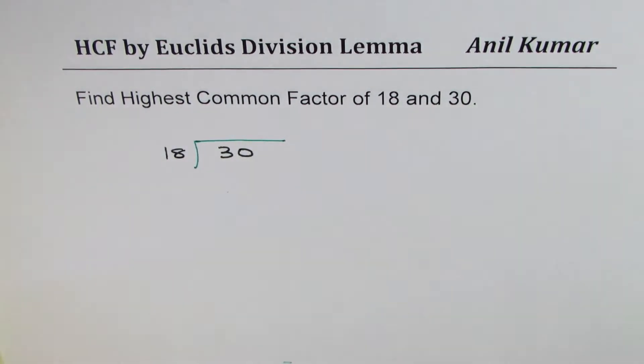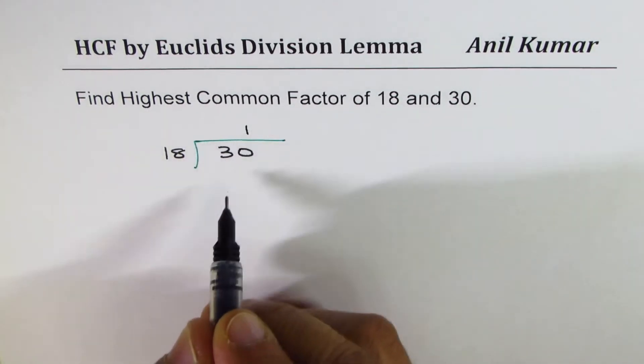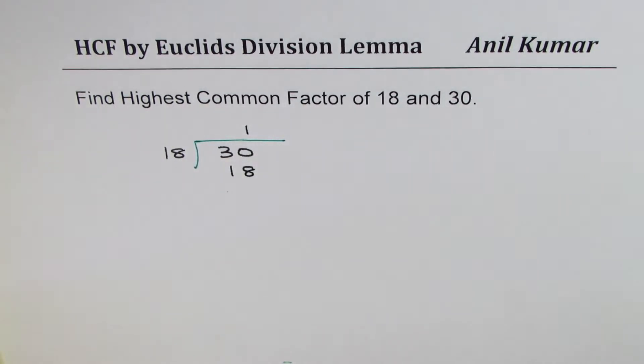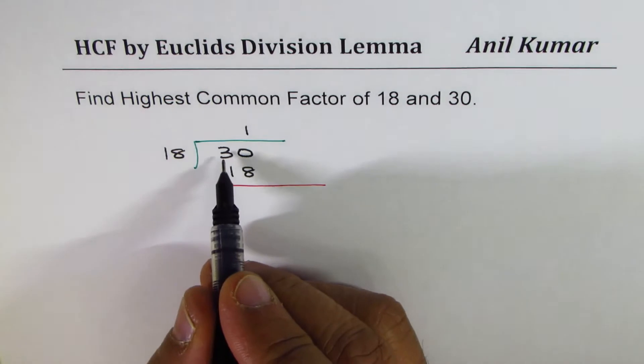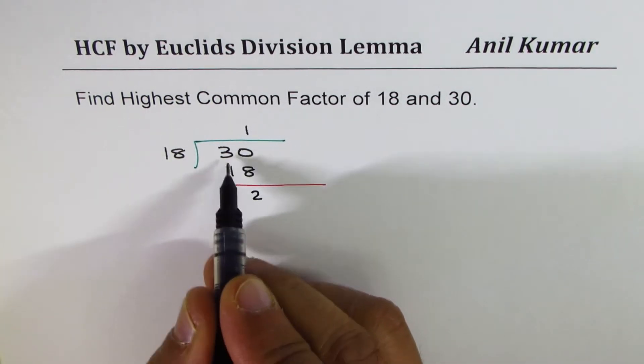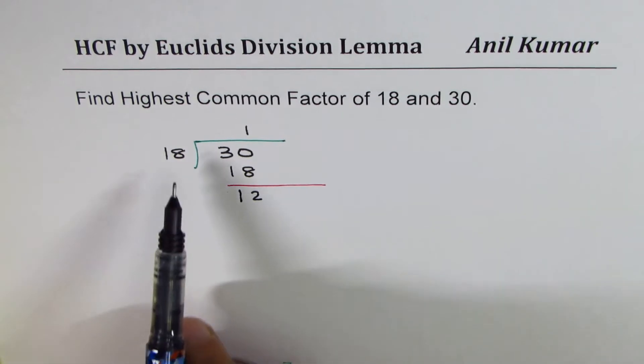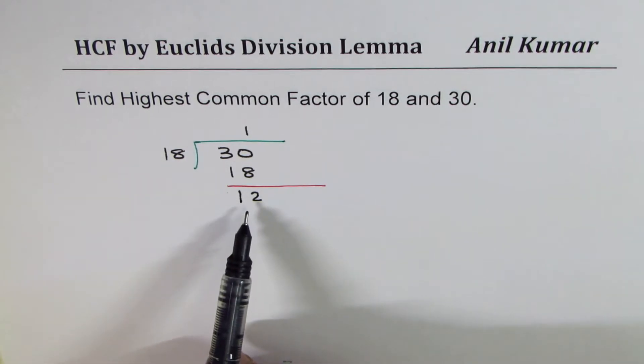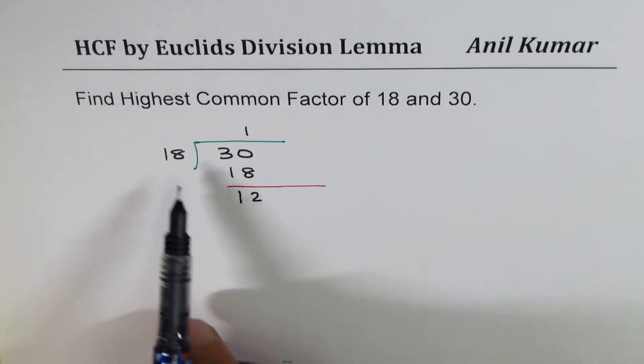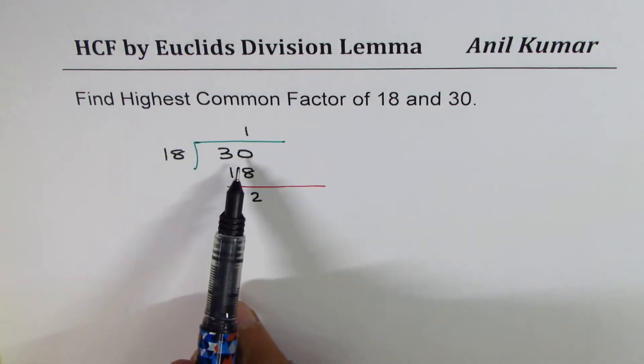We'll divide 30 by 18. So 18 goes one time. We get 18. And when you take away 18 from 30, you get 12. We did not get zero as the remainder. So 18 is not a factor of 30.